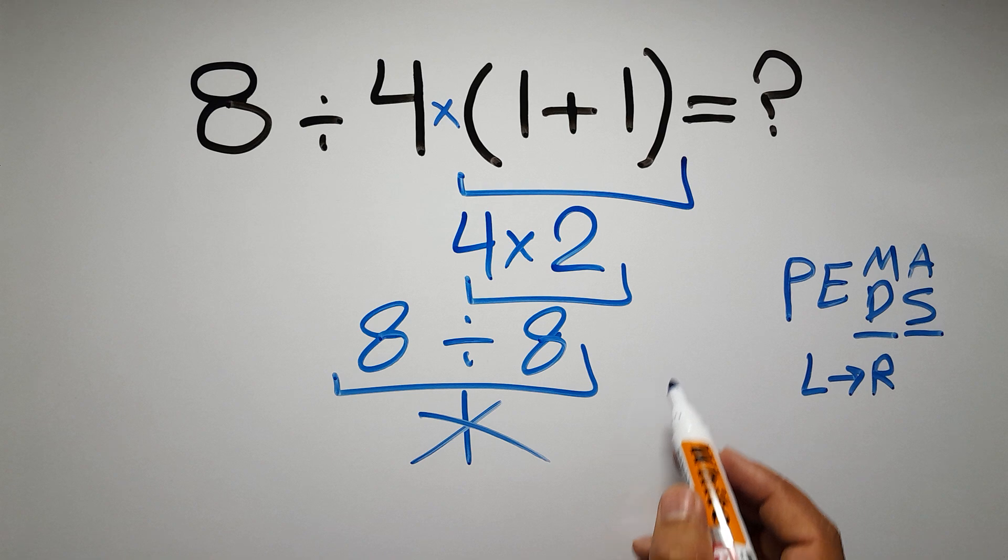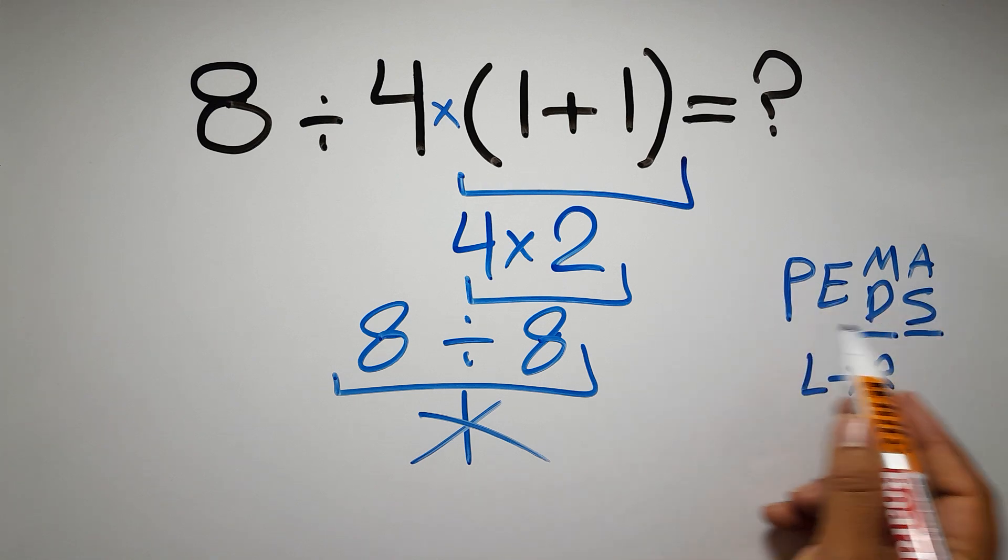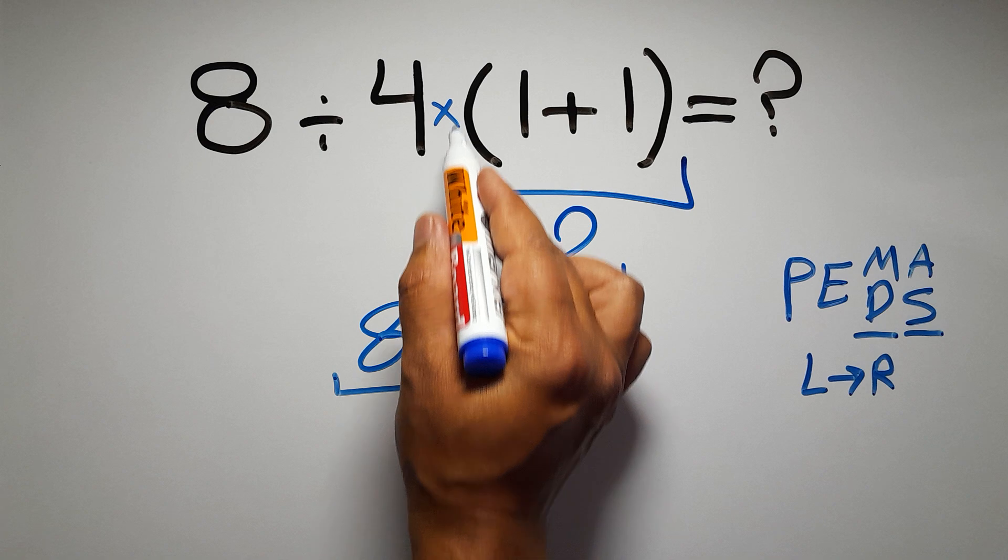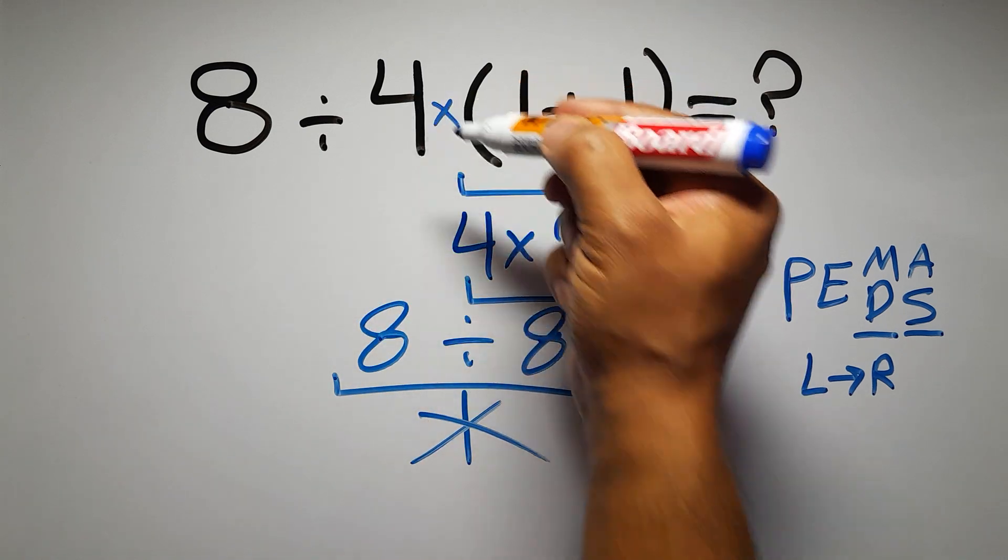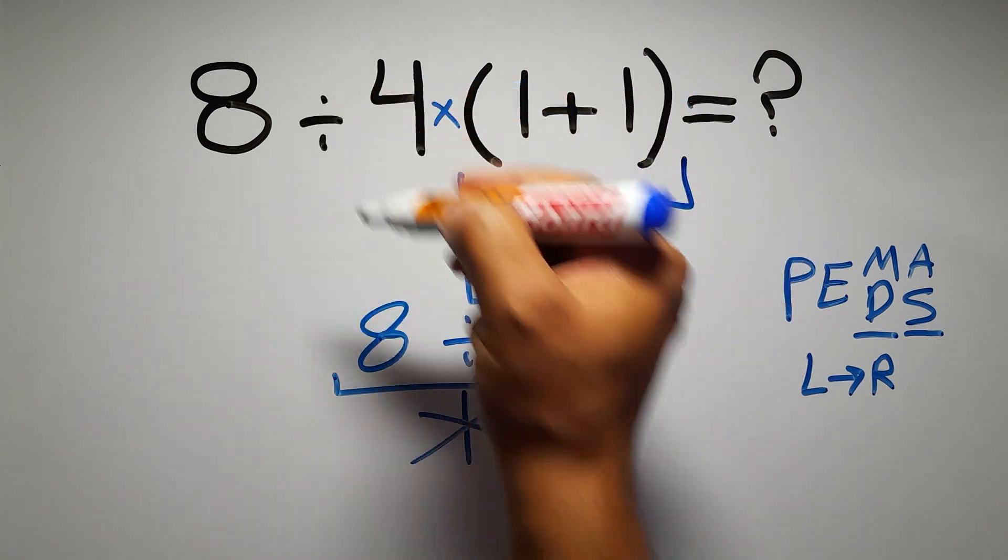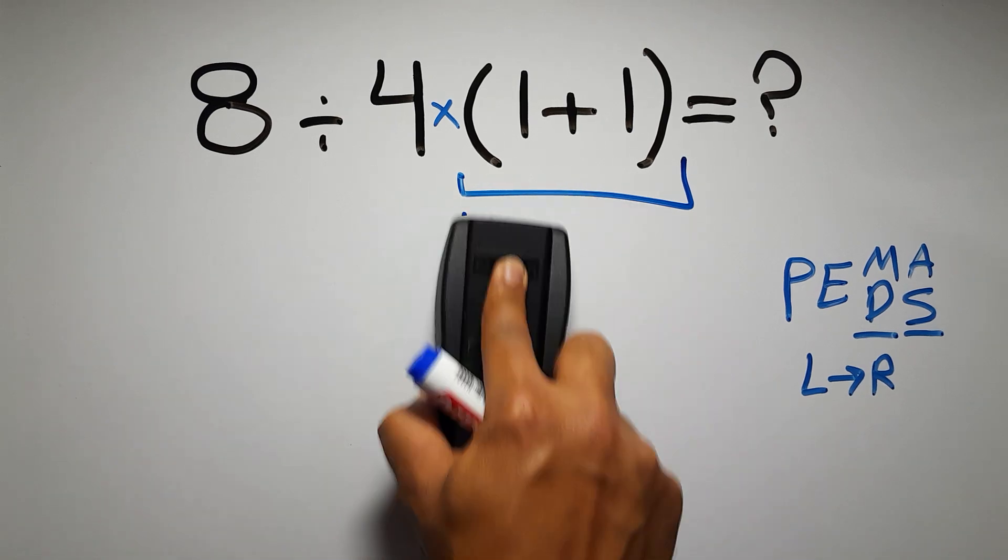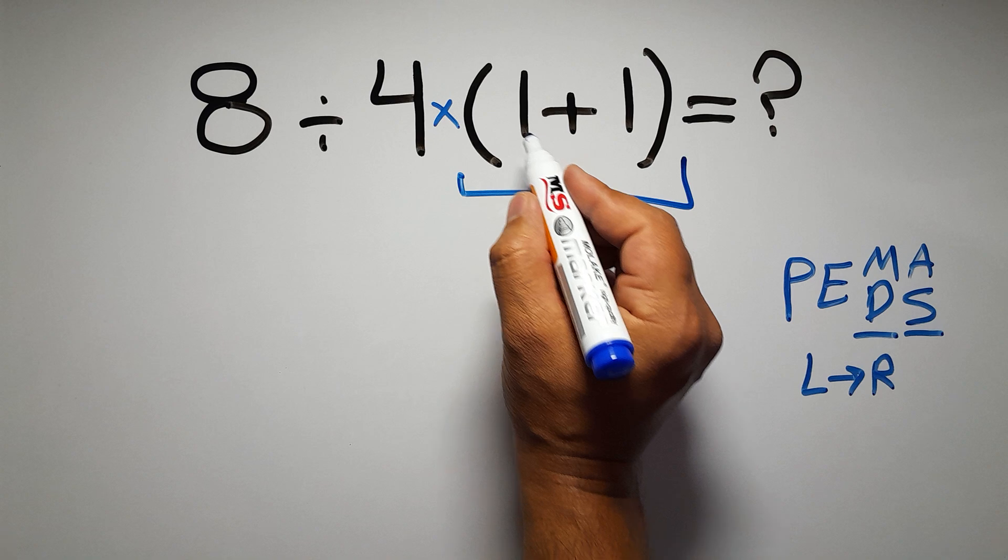Okay, so according to PEMDAS, first we have to do this parentheses, then this division, and finally this multiplication. If we do this multiplication before this division it is wrong. So first, this parentheses.